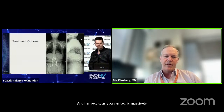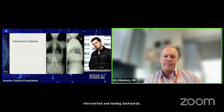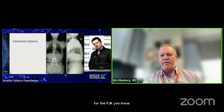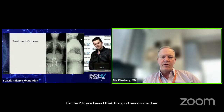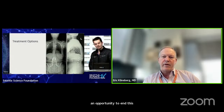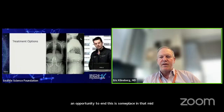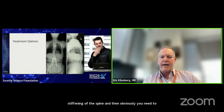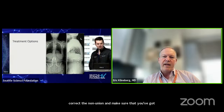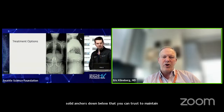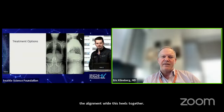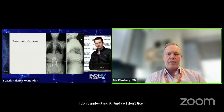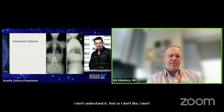I want to see the L4-S1 lordosis and whether she has adequate correction below. That open L5-S1 disc space makes me nervous as I think about making a larger construct. Her pelvis is massively retroverted, likely as compensation for the PJK. The good news is she appears to have a stiff thoracic spine — there's an opportunity to end somewhere in the mid-thoracic area where there are already osteophytes. You need to correct the non-union and make sure you've got solid anchors below. Her urinary incontinence makes me uncomfortable because I can't figure out why she had that problem.